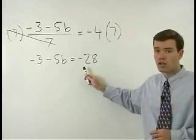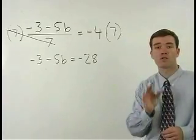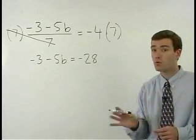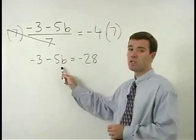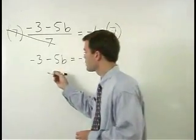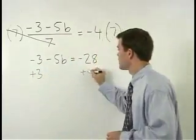Notice that our fractions are gone and we're left with a problem that looks just like the ones we were doing in the previous section. Our next step is to isolate the B term by adding 3 to both sides.